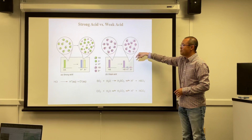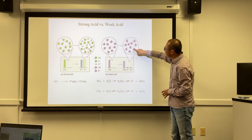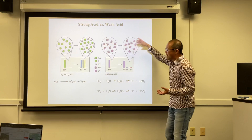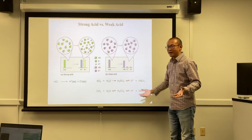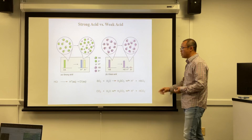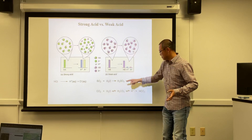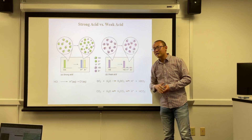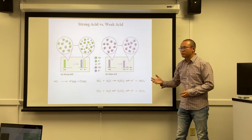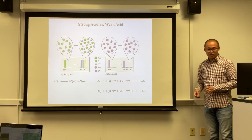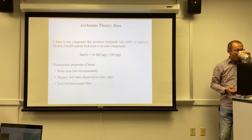Other acids like H2SO3 (formed from SO2 gas and water) and H2CO3 — carbonic acid (formed from CO2 and water) — are not like HCl. When these dissolve in water, only a small percentage ionizes; most molecules remain intact. These are called weak acids. Most acids are actually weak acids.